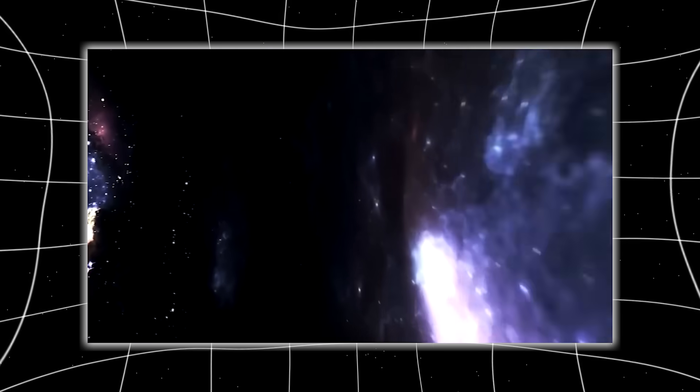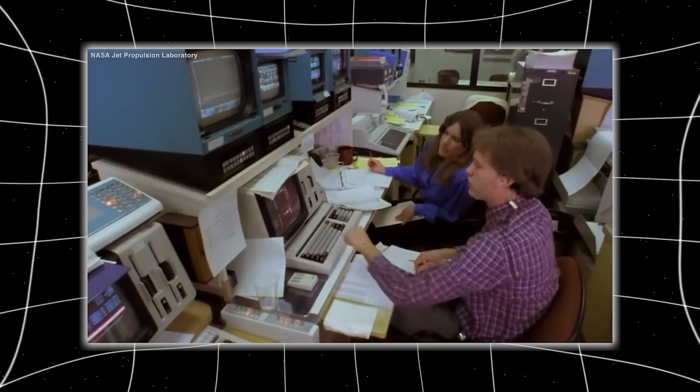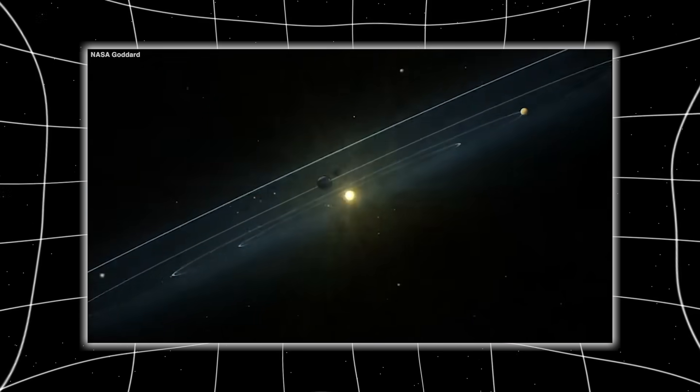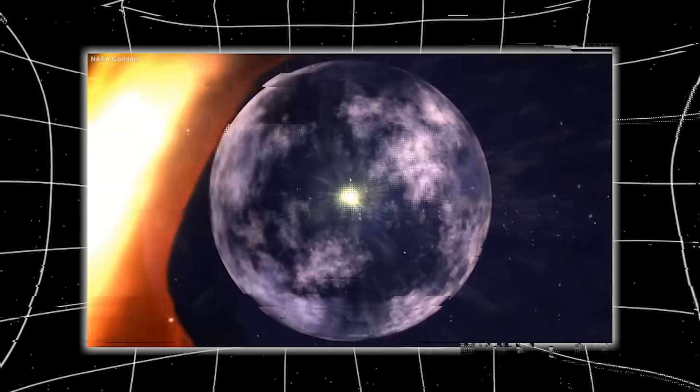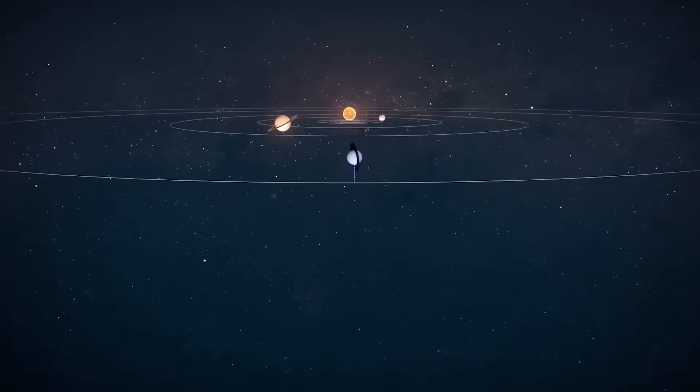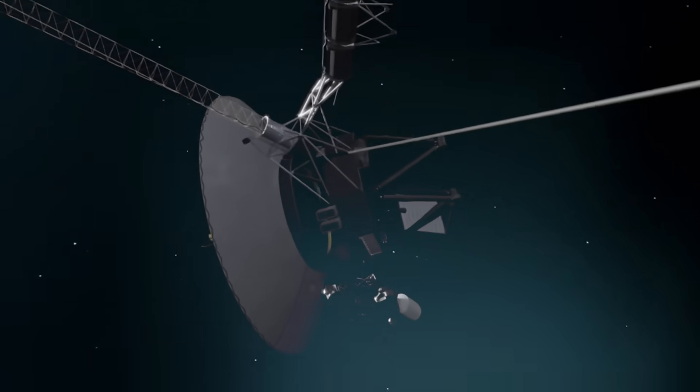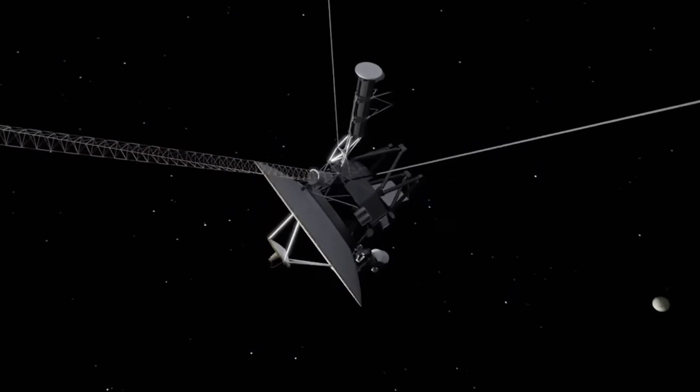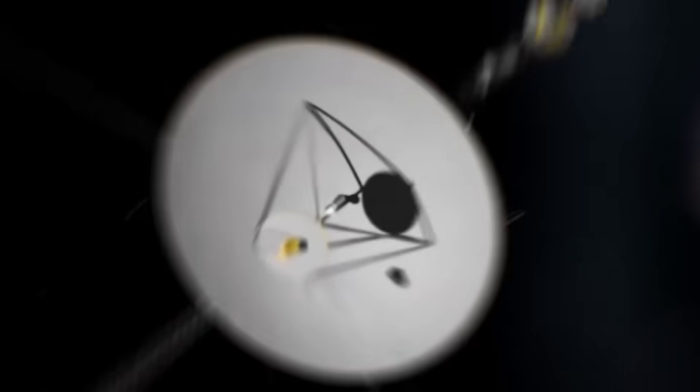It was built to observe but never to act, to listen but never to speak. And yet, just weeks ago, something changed. Signals began arriving that made no sense. Pulses with impossible precision, patterns nested within patterns, instruments turning on without command. And then came the drift. Voyager wasn't just moving anymore. It was being guided towards something.